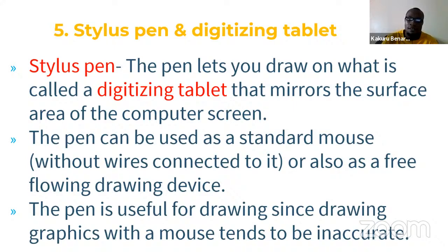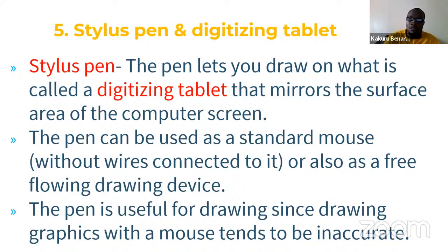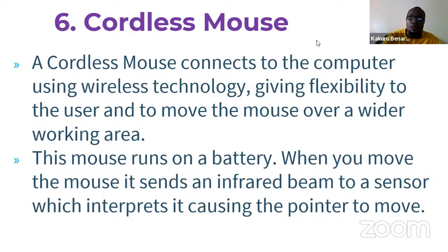The pen can be used as a standard mouse without wires, or as a free-flowing drawing device. The pen is useful for drawing since drawing graphics with a mouse tends to be unnatural. If you are good at drawing graphics, you can use a stylus pen to draw on a digitizing tablet and whatever you draw is transformed electronically on your screen.